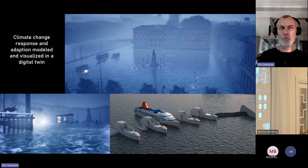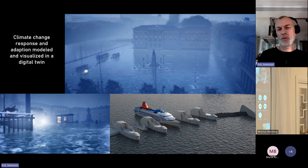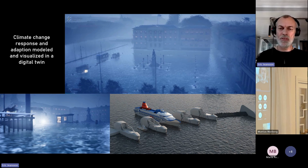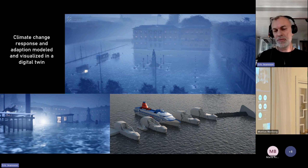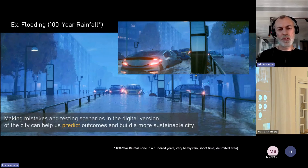Some use case examples: urban planning — this is a detailed planning exercise for central parts of Gothenburg. We also work a lot with climate change. This is a scenario showing how the city could look in 100 years when we have a higher sea level of perhaps one meter, and with an added storm adding another one and a half meters — giving two and a half meters higher sea levels total. This animation presents how the city could look in that situation, and of course we must avoid it.